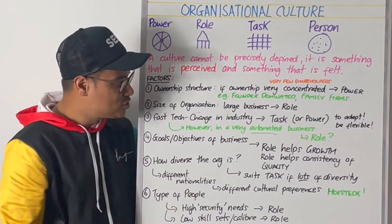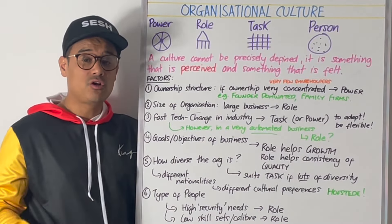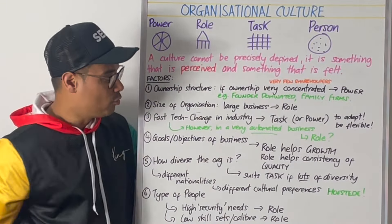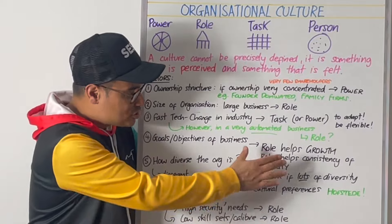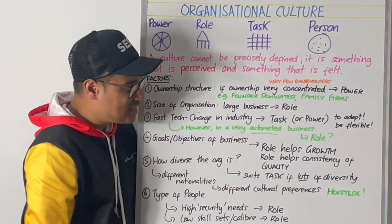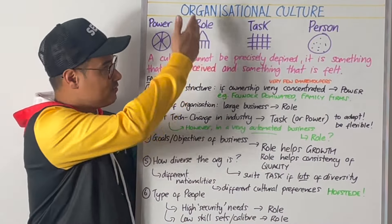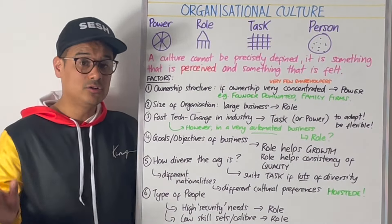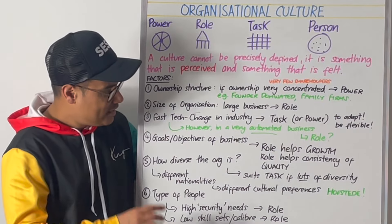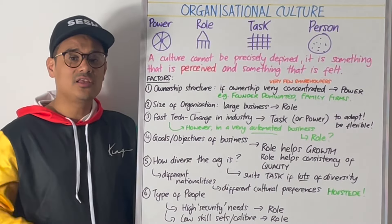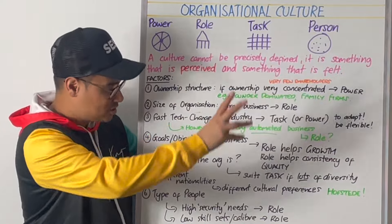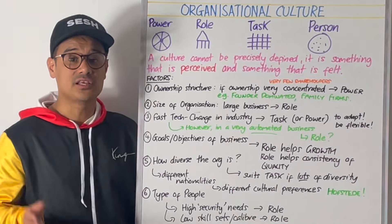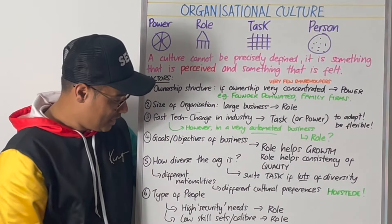Next is goals and objectives of the business. If you're trying to grow and you are currently in power culture, you'll probably want to move to role culture. Role culture will give you that consistency in your quality because of the different pillars working through their specialist tasks. Next is how diverse the organisation is. If the organisation is very diverse, then you probably want to have a task culture in place. If you've got different nationalities, they might have different cultural preferences. You might want to think about Hofstede there.